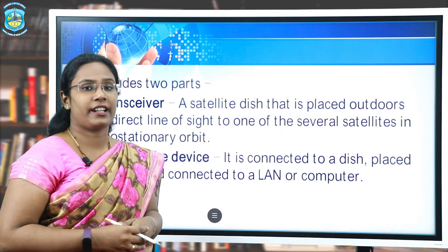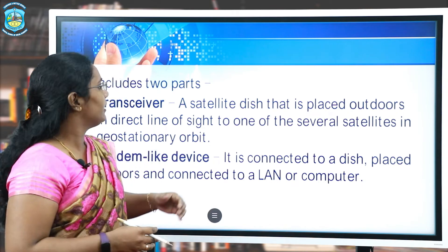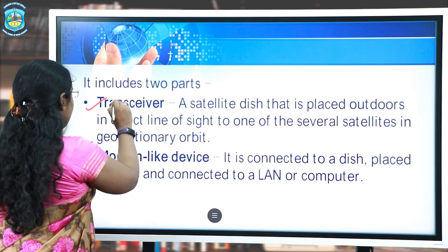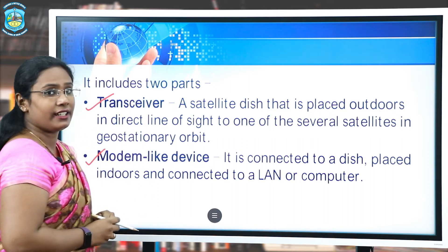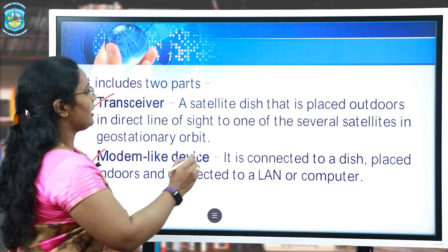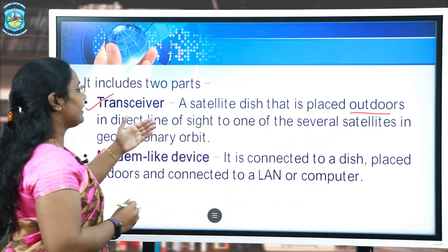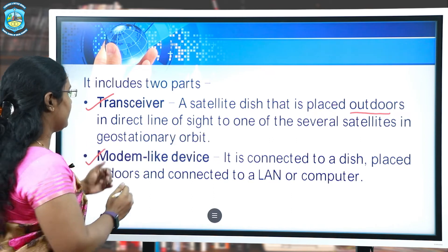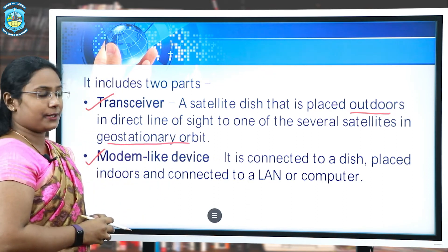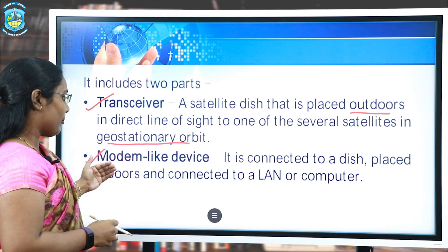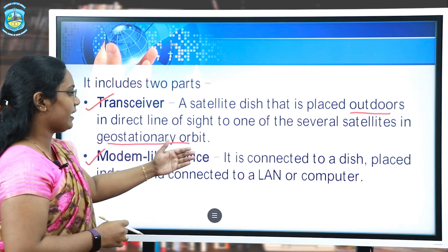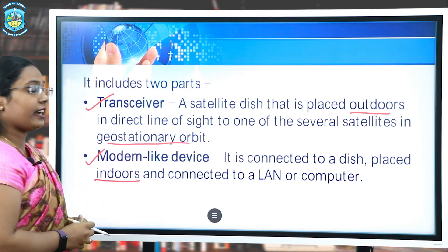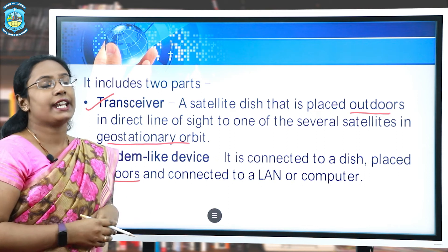The satellite internet connection requires two parts to be installed. First is the transceiver and second is a modem-like device. The transceiver is placed outdoors in direct line of sight to one of the satellites present in the geostationary orbit. A modem-like device is connected to a dish which is placed indoors and connected to the LAN or the computer.